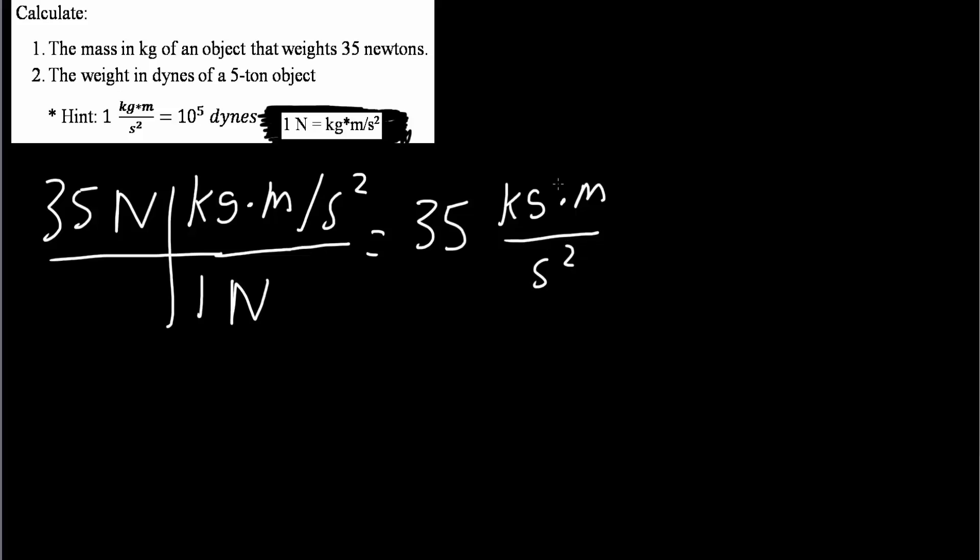So that would be 9.81 meters divided by seconds squared. And by doing this, meters would cancel, and seconds squared would cancel, and we would just get kilograms. So 35 divided by 9.81 is going to be 3.57 kilograms.